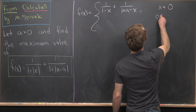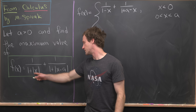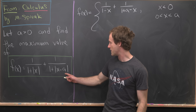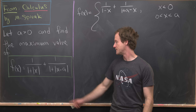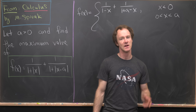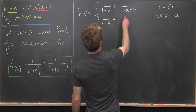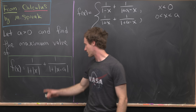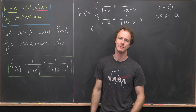When x is between zero and a, the absolute value |x| can be replaced with just x, because x is positive. But |x − a| will be replaced with the negative of its argument, because if x < a, then x − a is negative. So the function here is 1/(1 + x) + 1/(1 + a − x), replacing |x| with x and |x − a| with a − x.